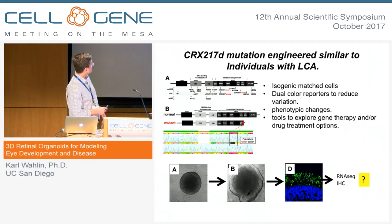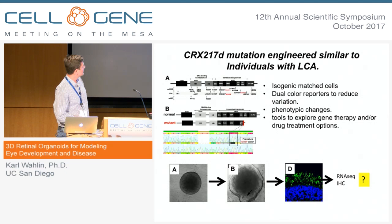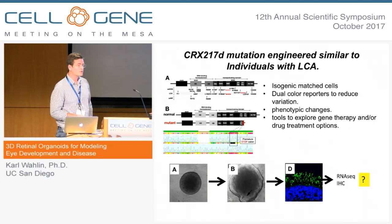In this particular example, we used gene editing to cause a small deletion that creates a truncation — a premature stop codon — which disrupts the trans-activating domain of the CRX protein. CRX is involved in retinal development, and this results in a very severe form of Leber congenital amaurosis with loss of photoreceptors. We have isogenic-matched cells for these, have rolled out dual-color reporters, and are currently doing phenotypic studies to look at differences and gene expression changes between those cells.